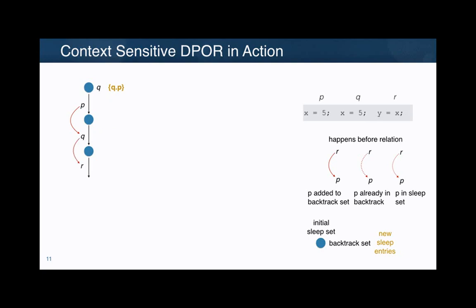We continue, and the same happens for Q and R. We check whether at this state doing Q then R is the same as R then Q — and it is the same. We get the same result, and then we annotate that we should not explore R followed by Q, because we have evidence they will lead to the same result in this context. We are exploiting these context-sensitive dependencies. Now continuing, we use the so-called sleep sets but now with sequences, propagating this information. After doing R, we should not pick Q — we avoid exploring that state.